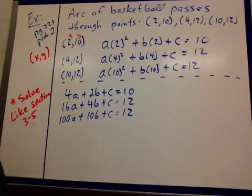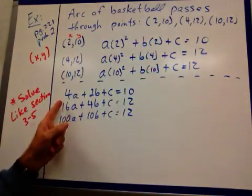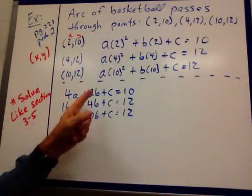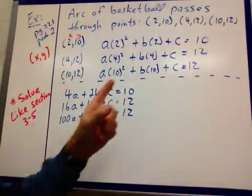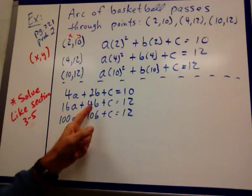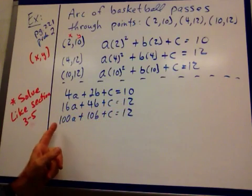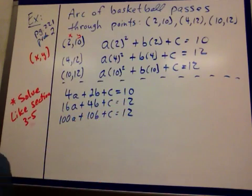Now when I do this, I've created three equations that look like this. 2 squared is 4a plus 2b plus c is 10, 4 squared is 16 plus the 4b plus 12, and then 10 squared is 100.